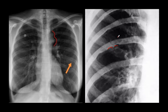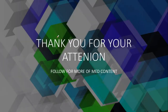There is also the 'three sign' on X-ray — you can see how it is forming like the number three. This three sign is due to constriction along the aorta followed by post-stenotic dilatation, producing that three sign appearance. Thank you for your attention, and please follow for more of this content.